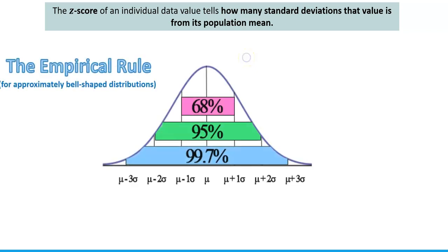Now let's redefine the empirical rule in terms of z-scores. According to the empirical rule, 68% of data values lie within one standard deviation away from the mean — and this is only for approximately bell-shaped or normal distributions. 95% of data values lie within two standard deviations from the mean, and 99.7% — almost 100% — lie within three standard deviations from the mean.